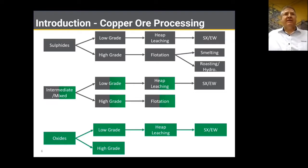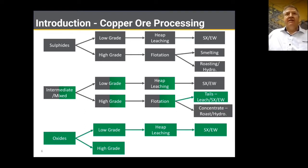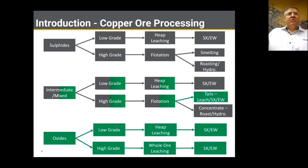The mixed ore is usually flotation, followed by the tails being sent for leach and solvent extraction and electrowinning, while the concentrate is sent for roasting and hydro — not usually smelting because the grade is usually a bit low. Oxide ore is sent for whole ore leaching, followed by solvent extraction and electrowinning.